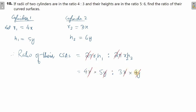After cancellation, 4 and 6 simplify: 4/6 = 2/3. So we get 2 × 5 = 10 in the numerator and 3 × 3 = 9 in the denominator. Therefore the ratio of their curved surface areas is 10:9. With this we close exercise 21D and finish our chapter on surface area, volume and capacity. One more exercise is left — you can try that by yourself. Thank you very much.